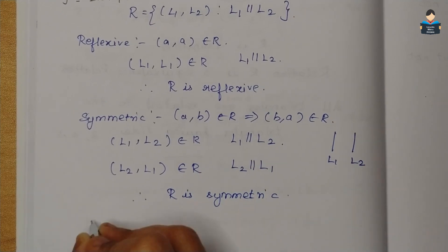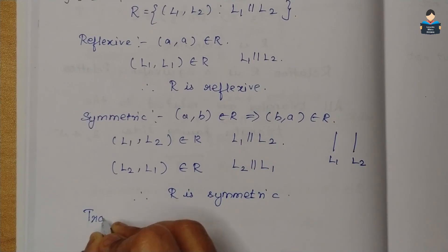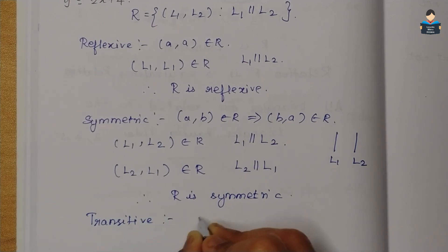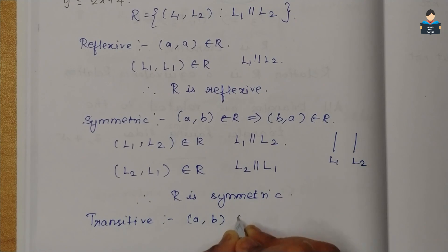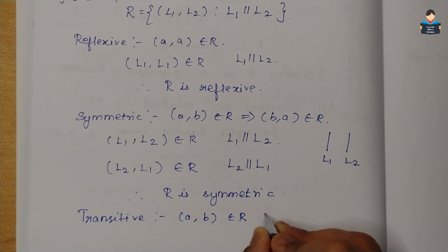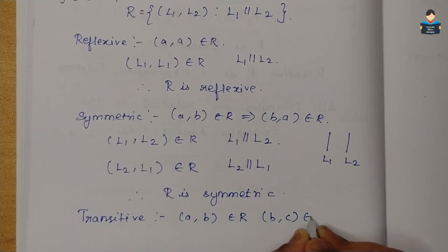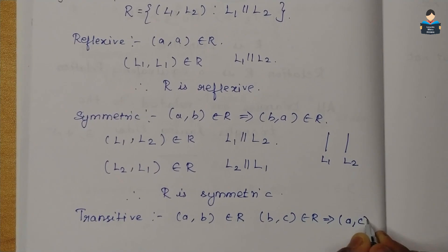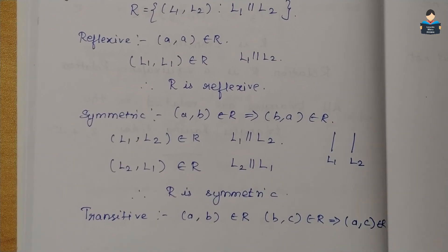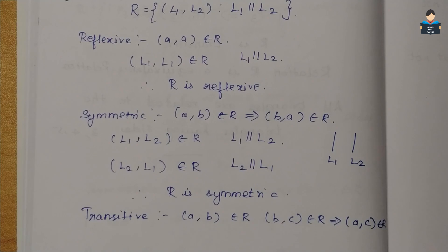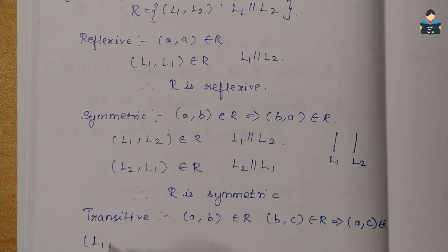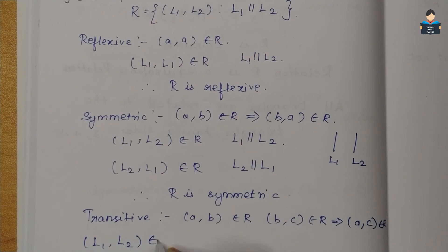Next, check the transitive condition. For transitive: if (a, b) belongs to R and (b, c) belongs to R, this implies (a, c) belongs to R. So we need to show that (L1, L3) belongs to R.